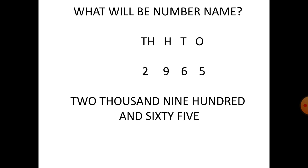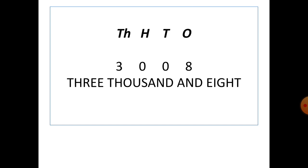What will be the number name of two nine six five? We have two thousand in the first part, nine hundred in the second part, and sixty-five in the third part — so it is two thousand nine hundred and sixty-five. In the next example, we have three thousand with zero in the hundreds, zero in the tens, and eight in the ones. We never write zero, so we just write three thousand and eight.